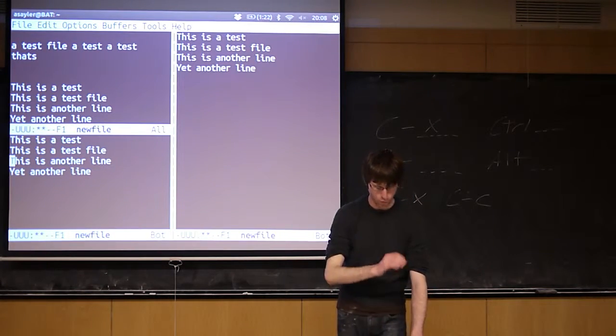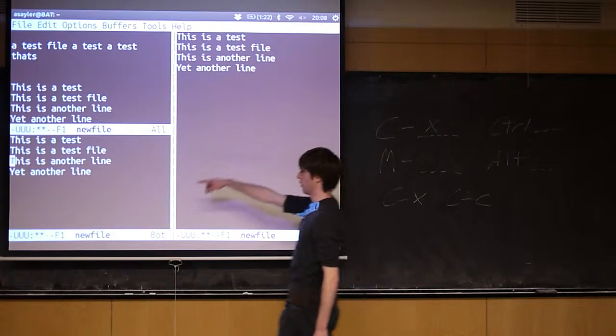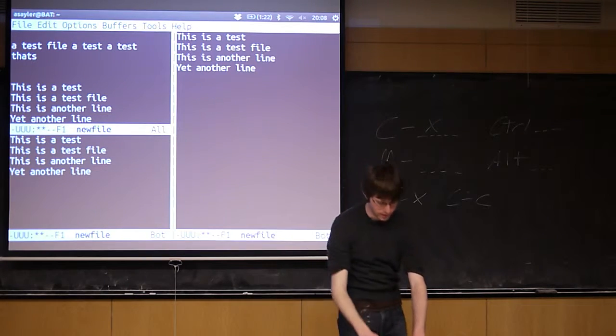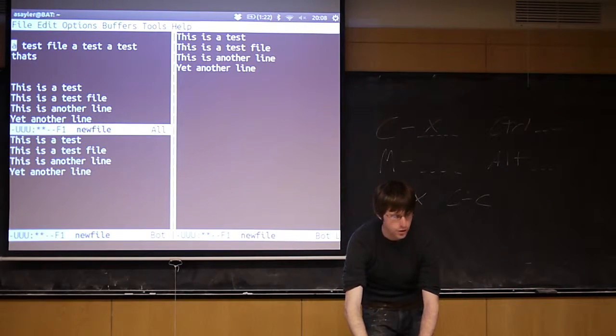If you want to move between windows, the command is ctrl x o. So if I do ctrl x o once, it'll go down to this one. If I do ctrl x o again, it'll go over there to the right, so on and so forth. So ctrl x o just keeps looping me through which window my cursor is currently in.